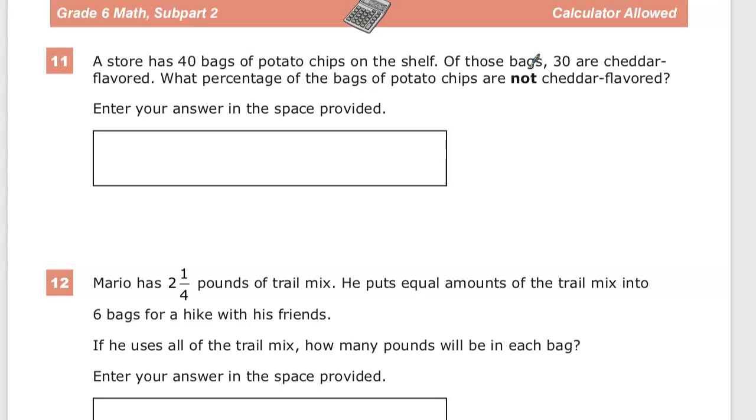There's a couple ways that you could do this. The first way to do it, which I think is less efficient, is to find the percentage of cheddar flavored and then take that away from 100% because whatever's left over, it's either cheddar flavored or it's not.